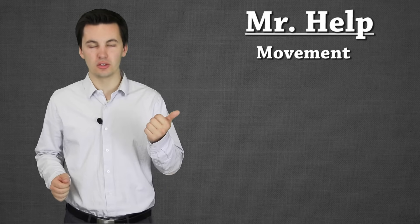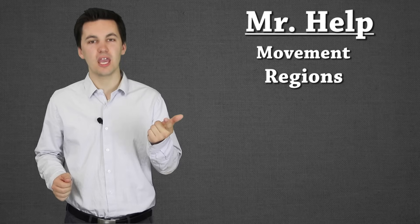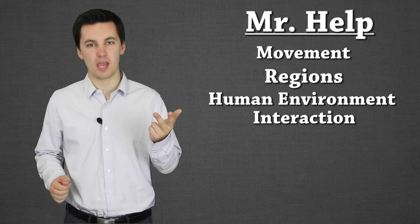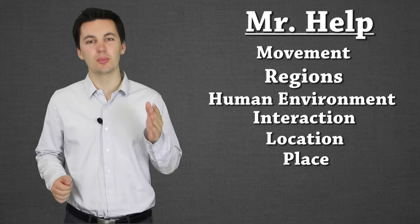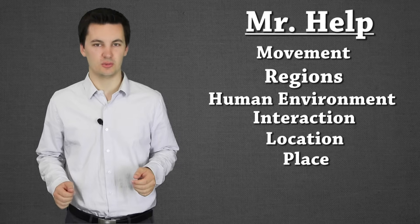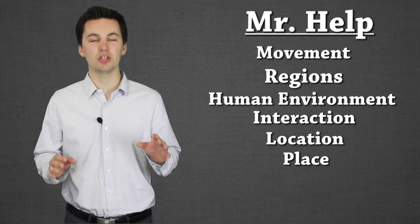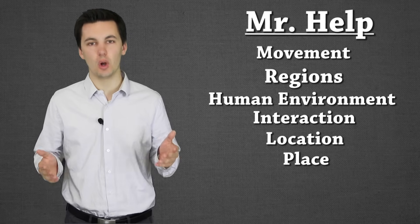Now throughout our class we're going to go into a lot of different things. So in order for you to remember the five themes of geography I want you to remember Mr. Help. Mr. Help is an acronym that will help you with remembering the five themes of geography. The first one, the M is movement. Then the R, regions. The H and the E are human environment interaction. The L is location. And then lastly we have place. If you can remember Mr. Help you can remember the five themes of geography. So let's break down each of these themes and see exactly what they are.